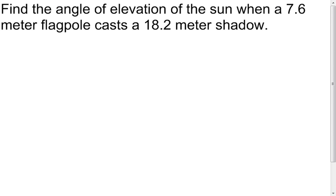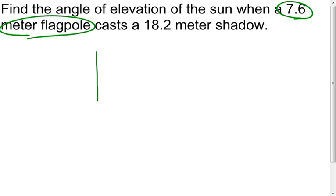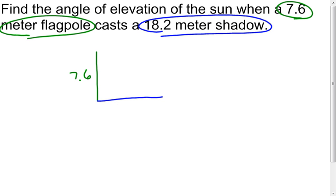My next problem has no picture, so we're going to have to draw our own. We need to find the angle of elevation of the sun with a 7.6 meter flagpole casting an 18.2 meter shadow. I draw my picture: I have a 7.6 meter flagpole, and a shadow of 18.2 meters. We need to figure out that angle of elevation.